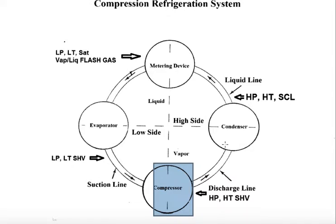Then our refrigerant comes into the condenser. About halfway through our condenser, the refrigerant has cooled enough and starts the condensation process, changing from a vapor to a liquid. And by the time it comes to the bottom of the condenser, it is now a high pressure, high temperature, sub-cooled liquid — in other words, it has moved a couple points under the condensing point.